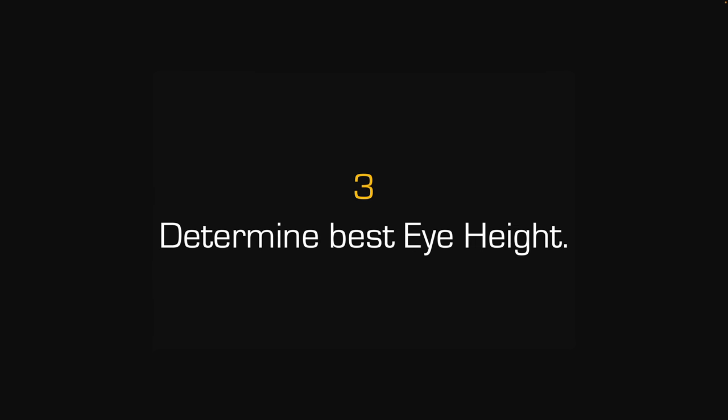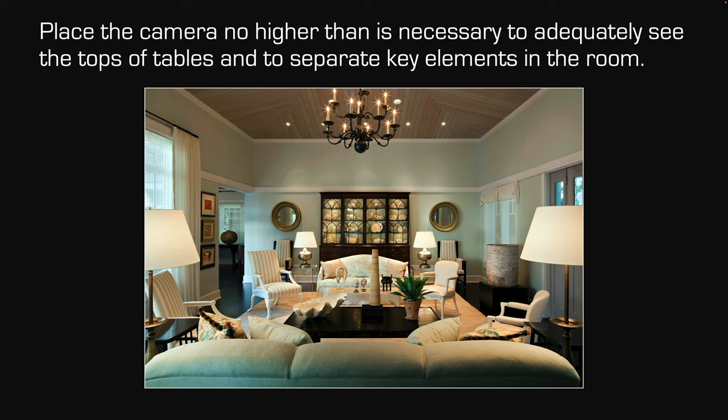Number three: determine the best eye height — and this is a sore spot, because I see so many photographs, particularly in real estate, where the camera is simply up too high, and if you're using a wide-angle lens you're going to get wicked distortion. The rule: place the camera no higher than is necessary to adequately see the tops of the tables and to separate the key elements in the room. I'm just at a point where I can see the table and a little space underneath where I can see the rug. Everything I'm doing is to create a sense of depth — a three-dimensional world translated into two dimensions. Items should be in front of or behind one another, clearly separated, but almost never tangential because that ruins the sense of depth.